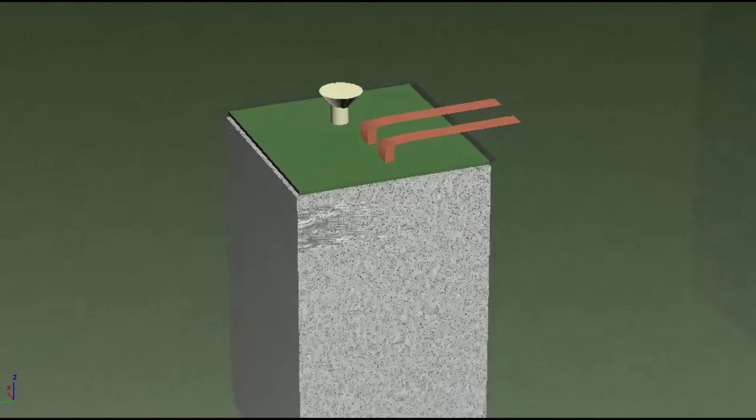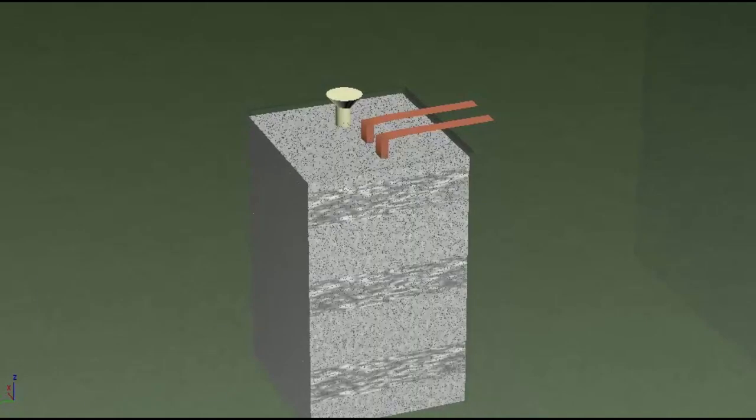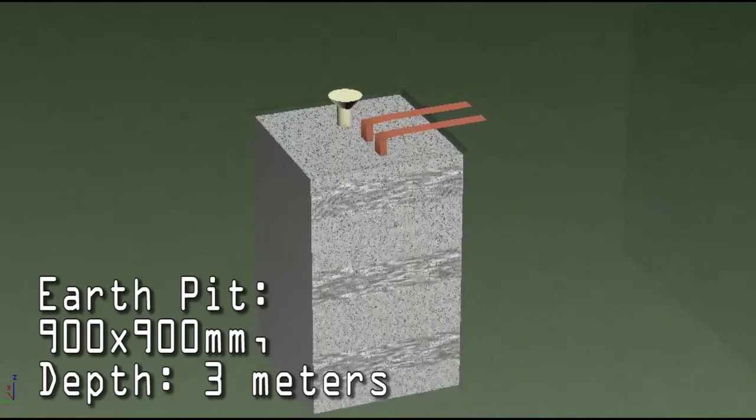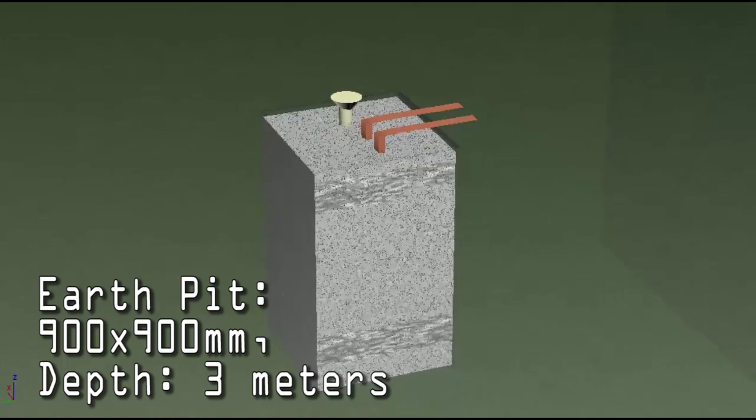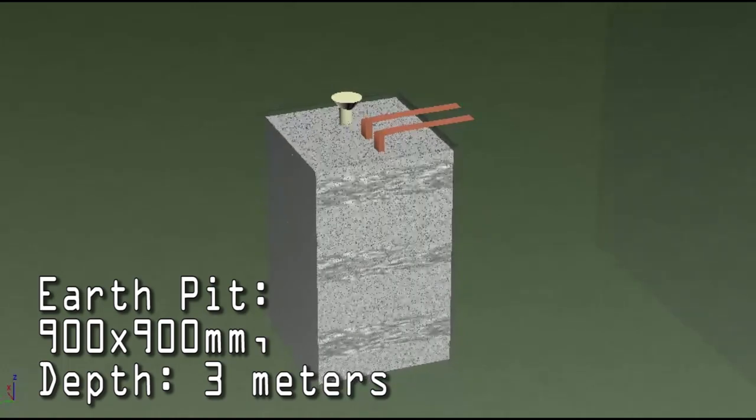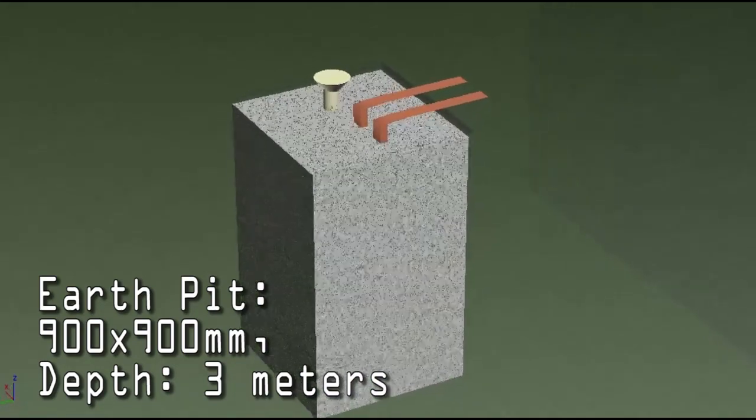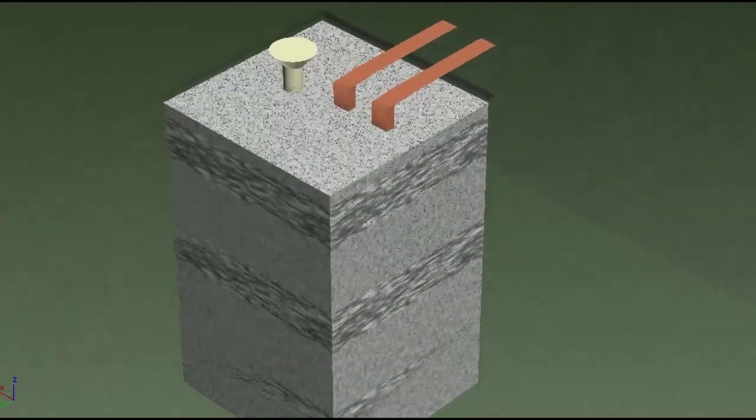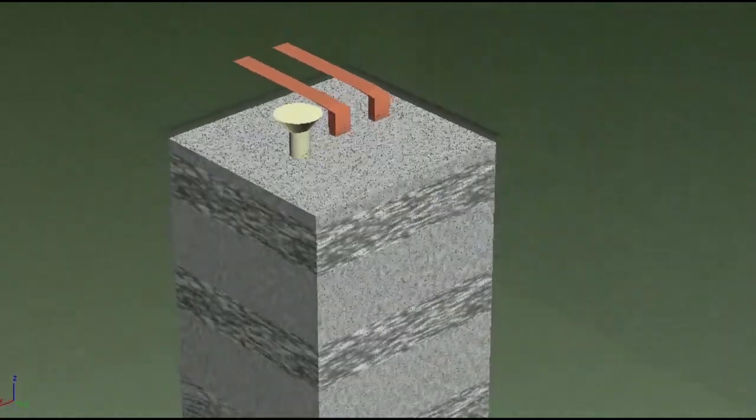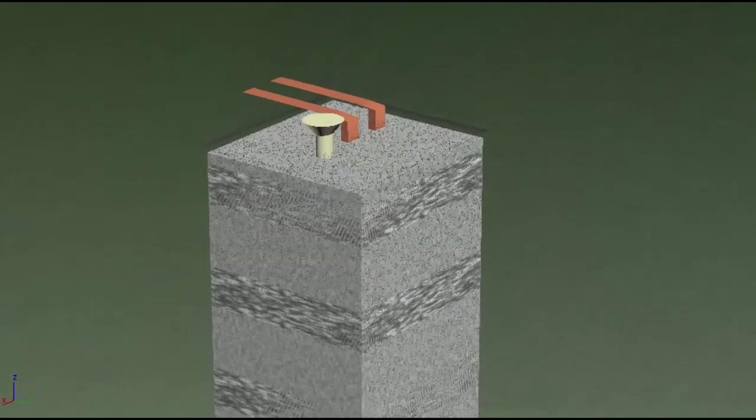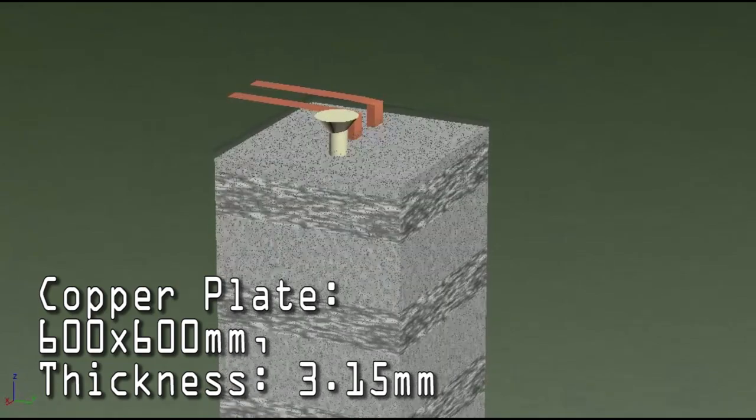The dimensions of the earth pit should be 900 mm by 900 mm and it should be around 3 meters deep. Inside the salt and charcoal layers, a copper plate of size 600 mm by 600 mm and thickness 3.15 mm is positioned in the middle.